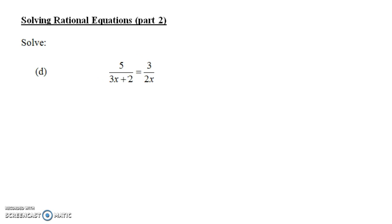Solve 5 over 3x plus 2 equals 3 over 2x. If you've solved these before, if we have something of this form where you just have a fraction equals a fraction, you can do something called cross-multiply. You can do 5 times 2x will equal 3 times 3x plus 2. But why does that work?